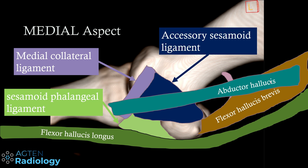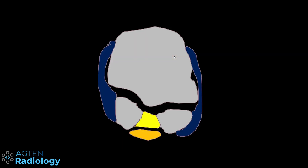Overlying on the medial aspect is the abductor hallucis tendon. The sesamoid phalangeal ligament runs from the distal pole of the sesamoid down to the plantar base of the proximal phalanx — a very important structure, sometimes also called the metatarsal sesamoid ligament.